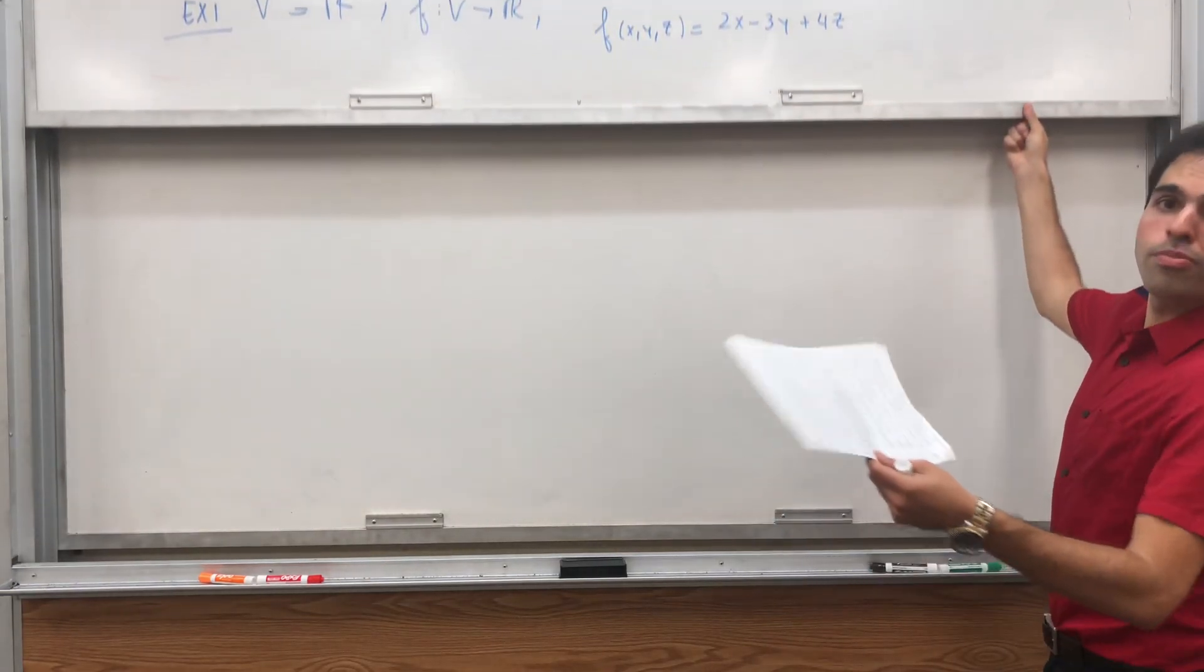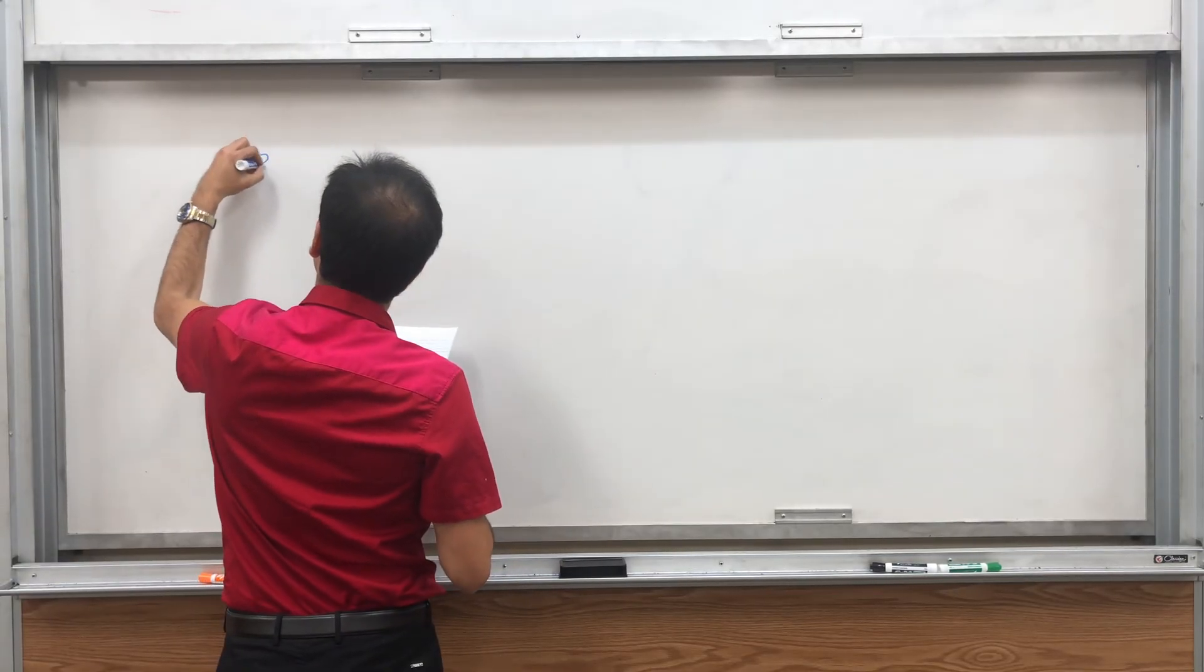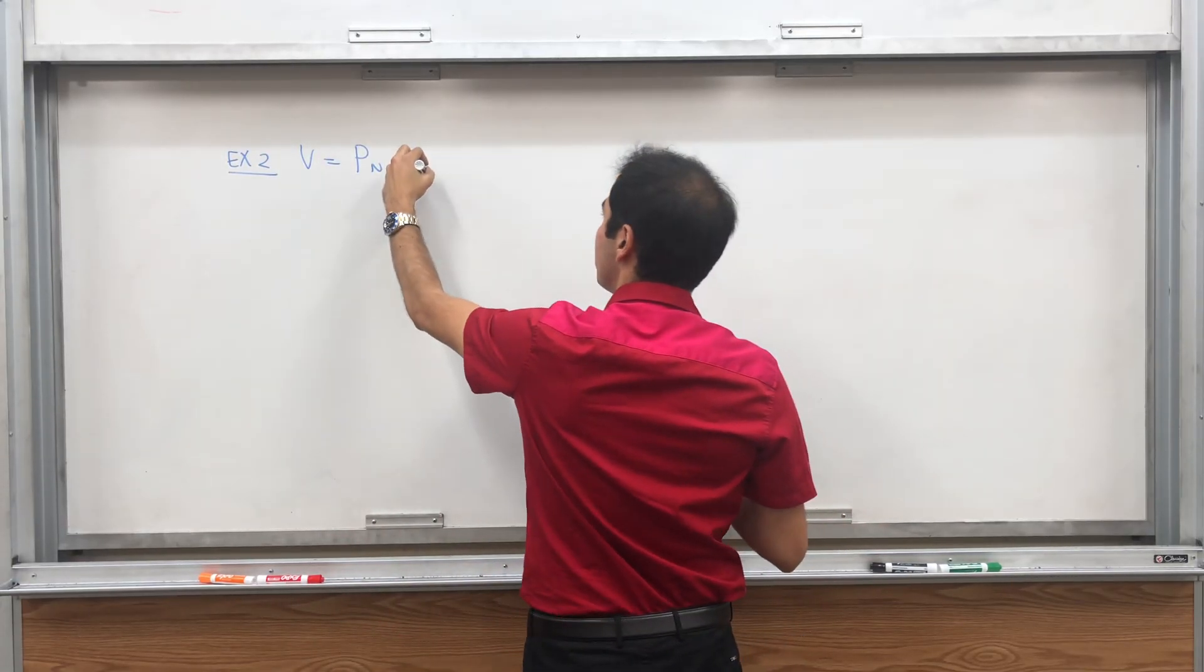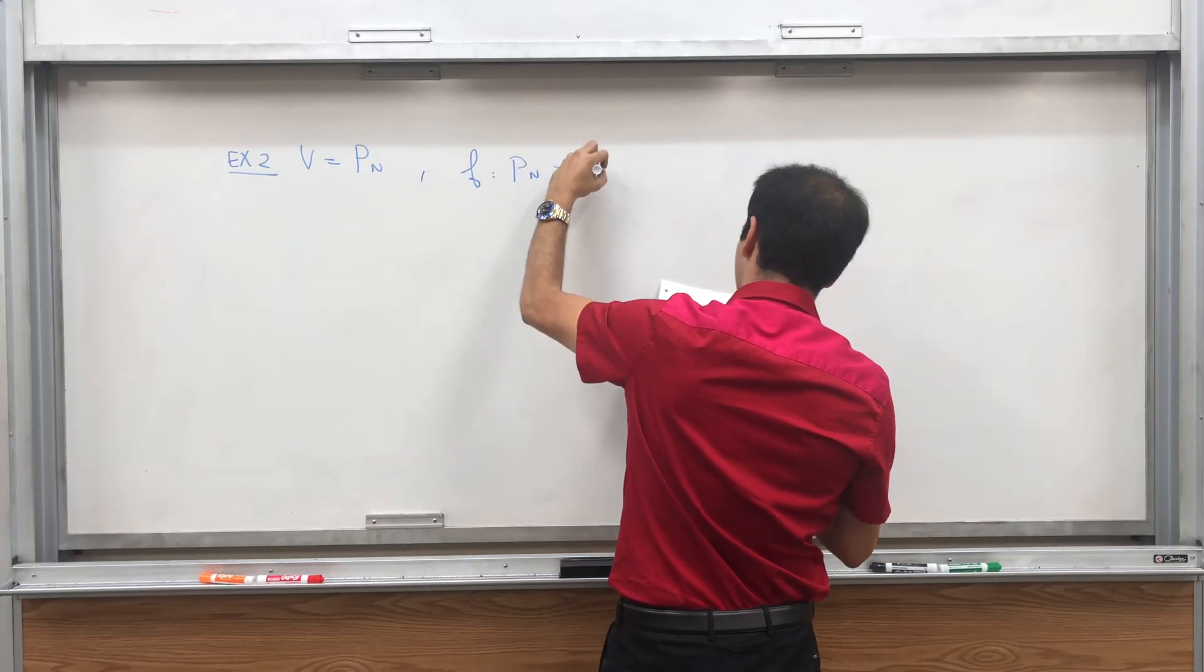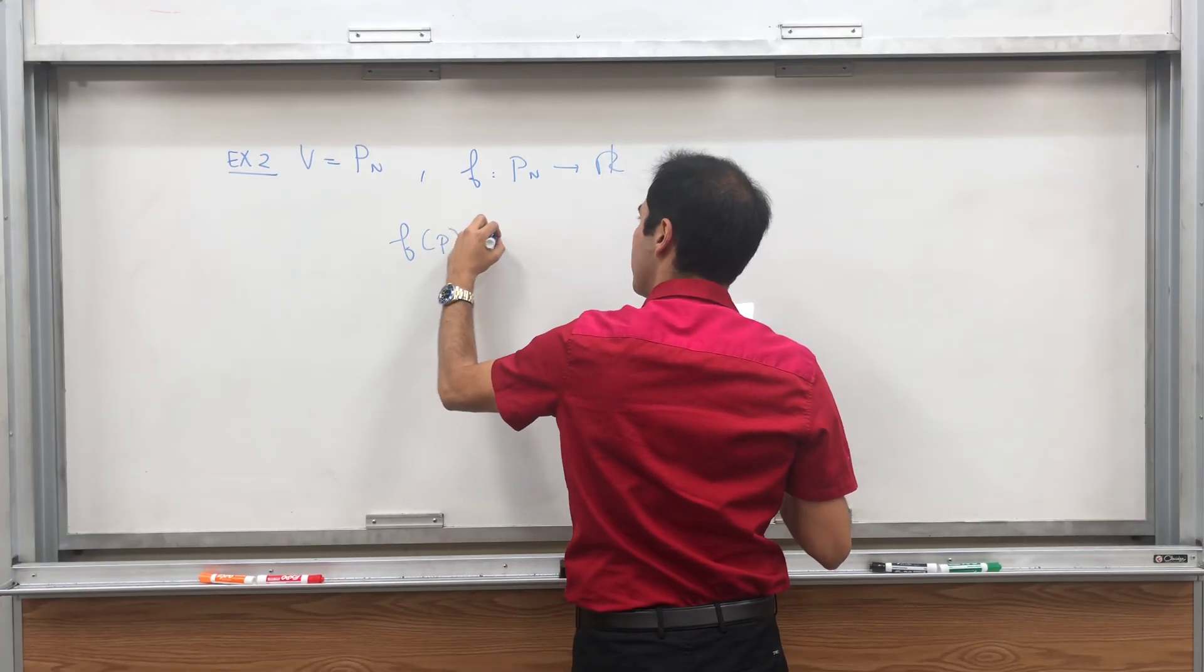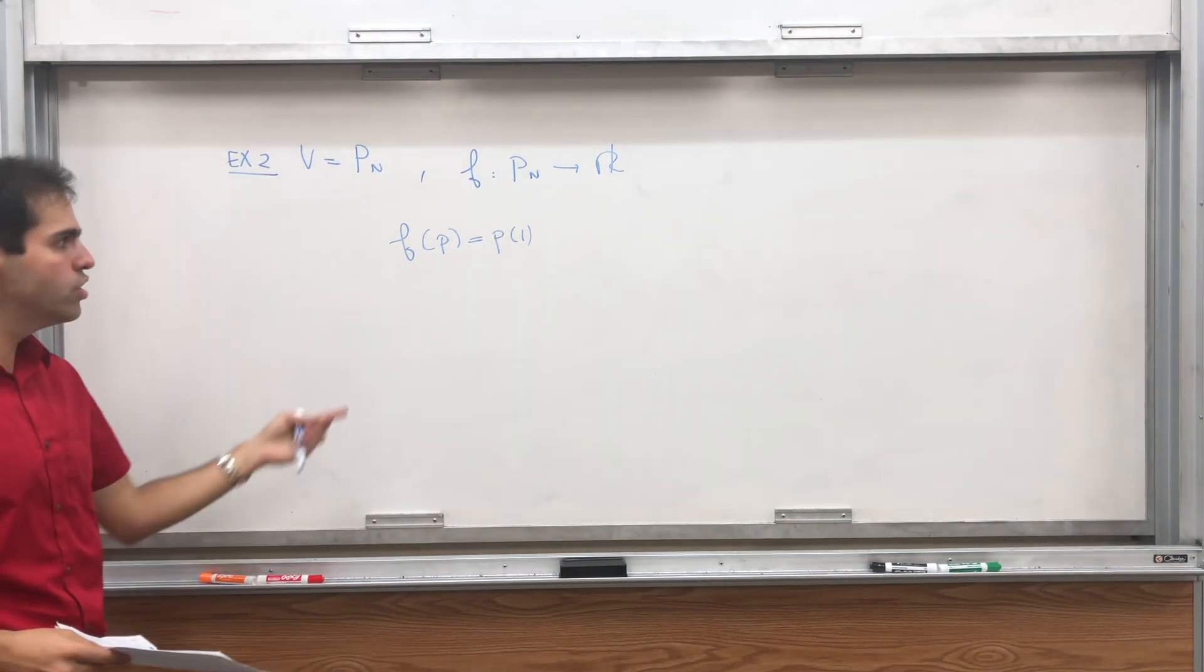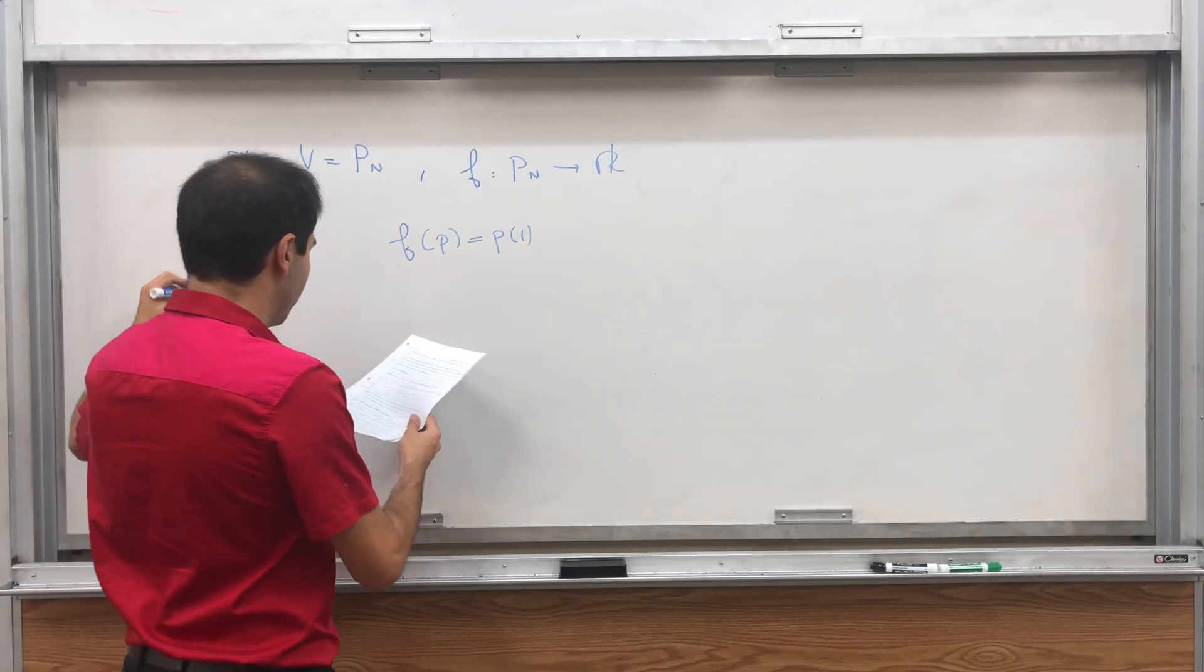But there are also more exciting ones. For example, if you consider V to be the space of polynomials of degree less than or equal to n, and F goes from Pn to R. And what F does, it takes a polynomial and evaluates it at 1. Then you can show it is a linear transformation and the values are in R. So that's completely fine.